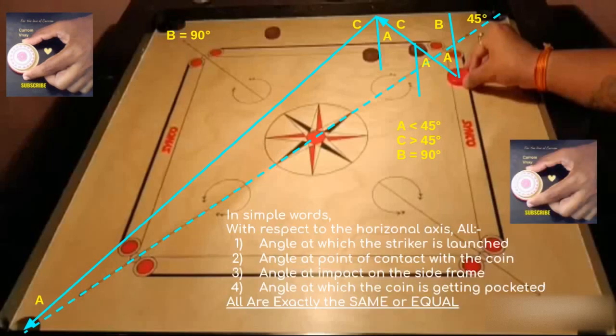In simple words, with respect to the horizontal axis, all angle at which the striker is launched, angle at point of contact with the coin, angle at impact on the side frame and the angle with which the coin is getting pocketed, all are exactly the same or equal.